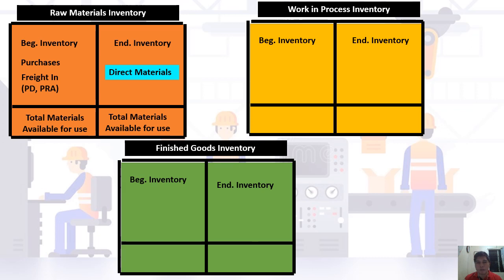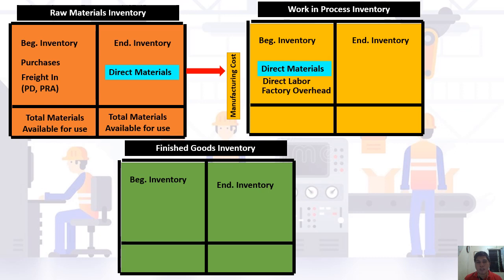The direct materials used is transferred from the right side of raw materials inventory to the left side of work in process inventory. Since the direct materials are now in the factory, in order to be transformed into finished product, additional costs must be incurred. Aside from direct materials, we need to include conversion costs — namely direct labor and factory overhead.